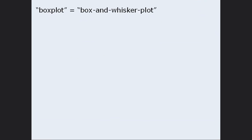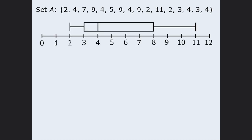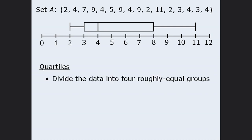Here's a brief preview. If we wanted to represent the following set of numbers in the form of a box plot, it would look something like this. These box plots are based on the concept of medians, as well as the concept of quartiles. There are three quartiles altogether, and they divide the data into four groups that have approximately the same number of values in them.